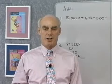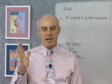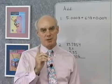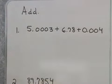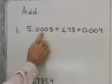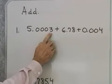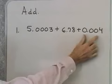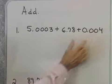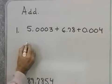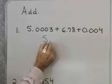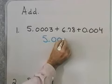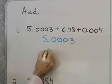We add decimal numbers by aligning the decimal points, and then adding the numbers that are in the same column. Let's look at our first example. I have 5.0003 plus 6.78 plus 0.004. So, I want to add these numbers up.